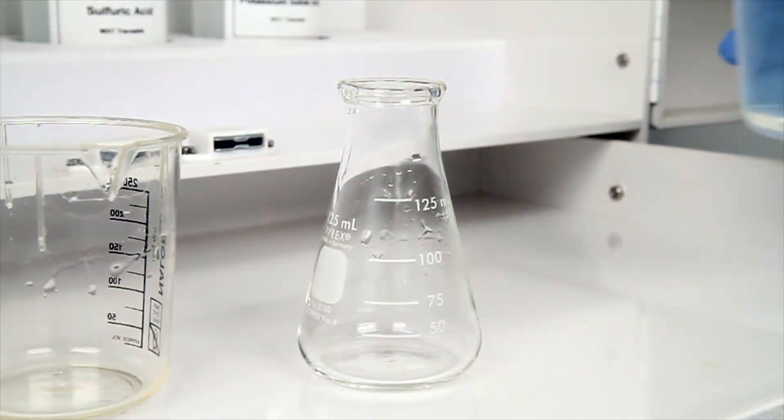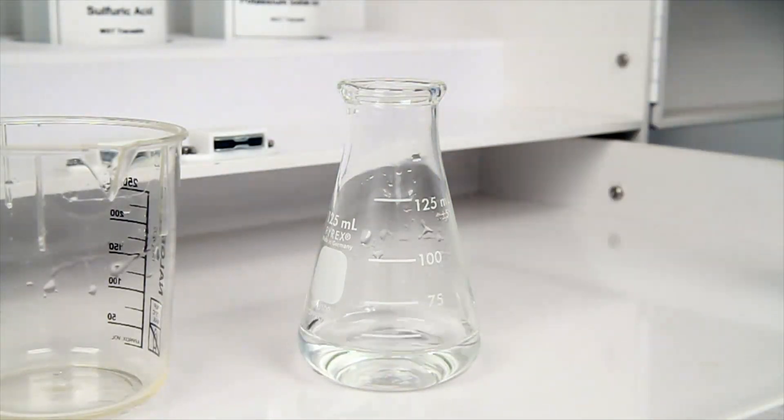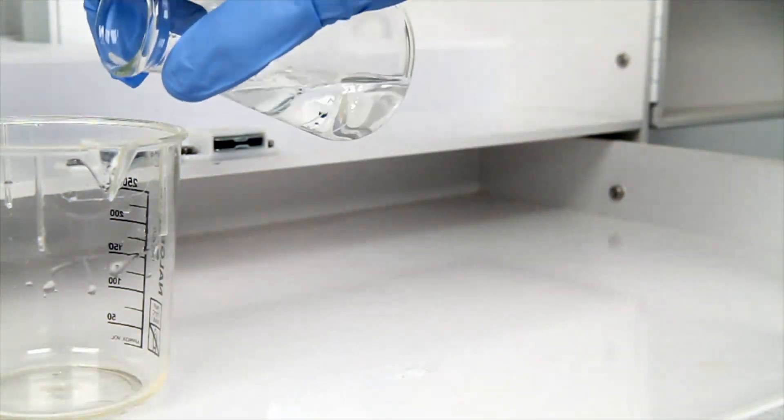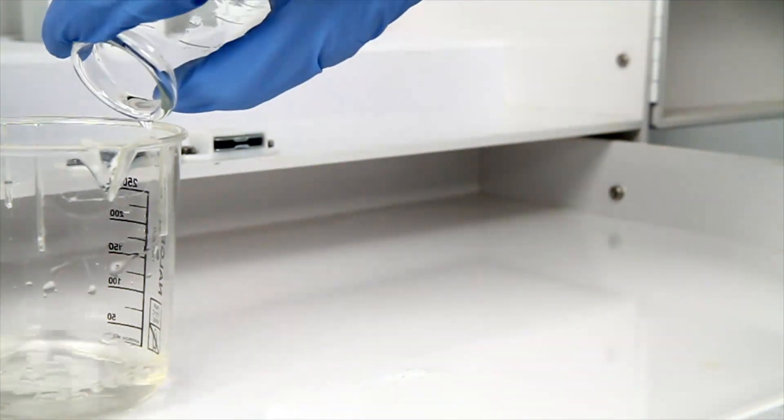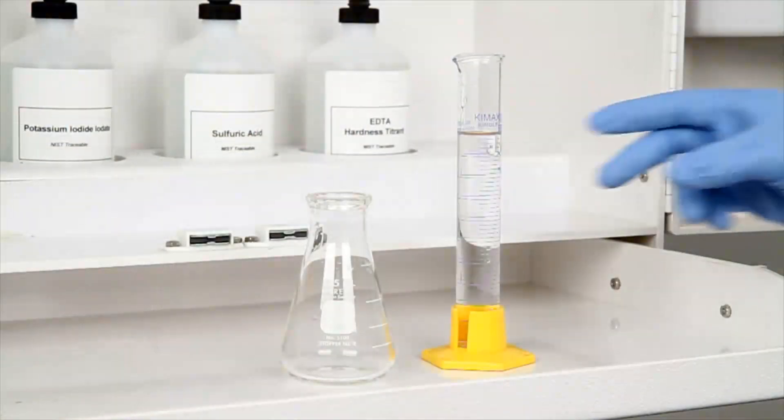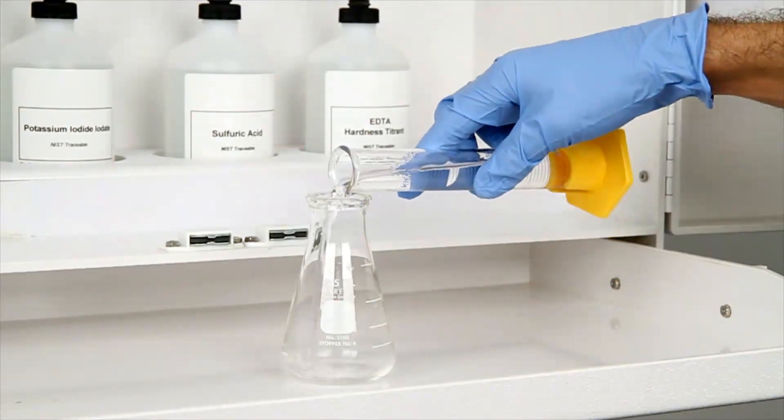Next, gather your sample. To prevent contamination from a previous titration, rinse the flask with the sample to be tested. Then, use a graduated cylinder to accurately measure your sample and add the sample water to the flask.